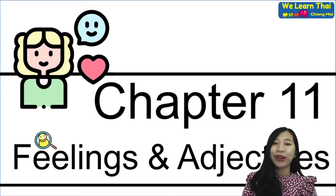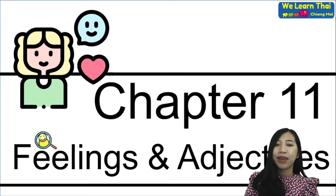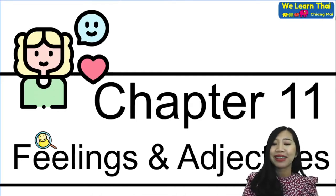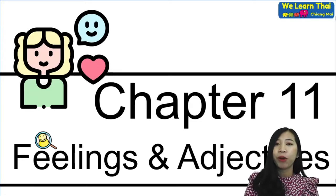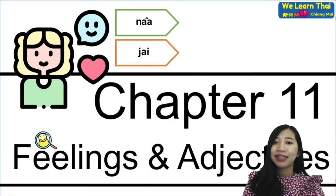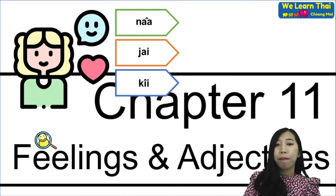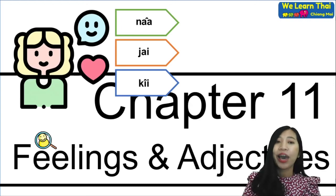Hi everyone, welcome to We Learn Thai e-learning. Today you're going to learn chapter e-learning about feelings and adjectives. The main things about this chapter are how to ask about feelings in Thai, and also the important words: 'na', 'chai', and 'ki' — three important words that you have to memorize. By the end of the class you'll be able to ask people about their feelings. I hope you guys enjoy.